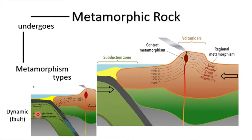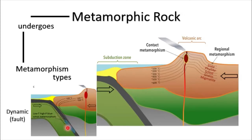The third type of metamorphism only occurs during a fault — that's why it's called dynamic metamorphism. While regional metamorphism is produced due to the pressure of the earth's crust, when a fault slides or passes another, it can also create pressure to the crust and produce another type of metamorphic rock. The three types of metamorphism are contact metamorphism, regional metamorphism, and dynamic metamorphism.